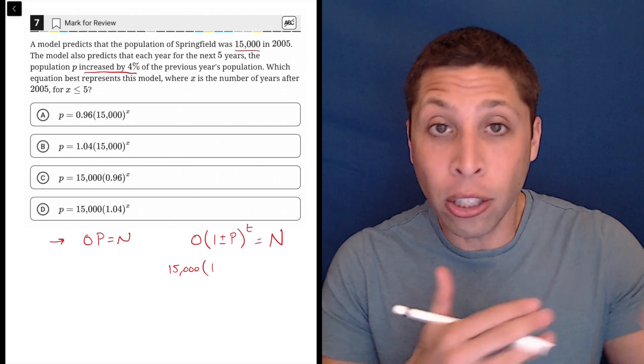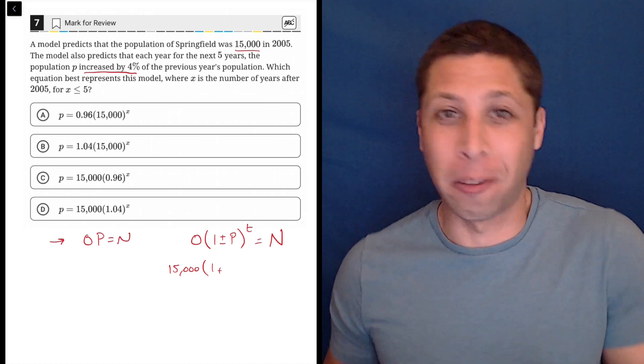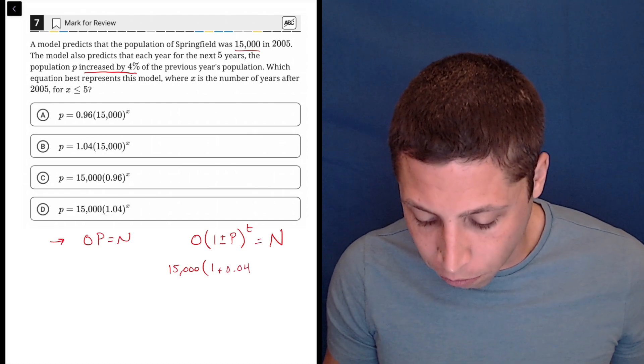The good thing about this formula is it matches with our story identically. It's very literal. They say it's an increase of 4%. So we're going to use the symbol for increase, plus. Then 4% needs to be written as a decimal. So this should be 0.04.